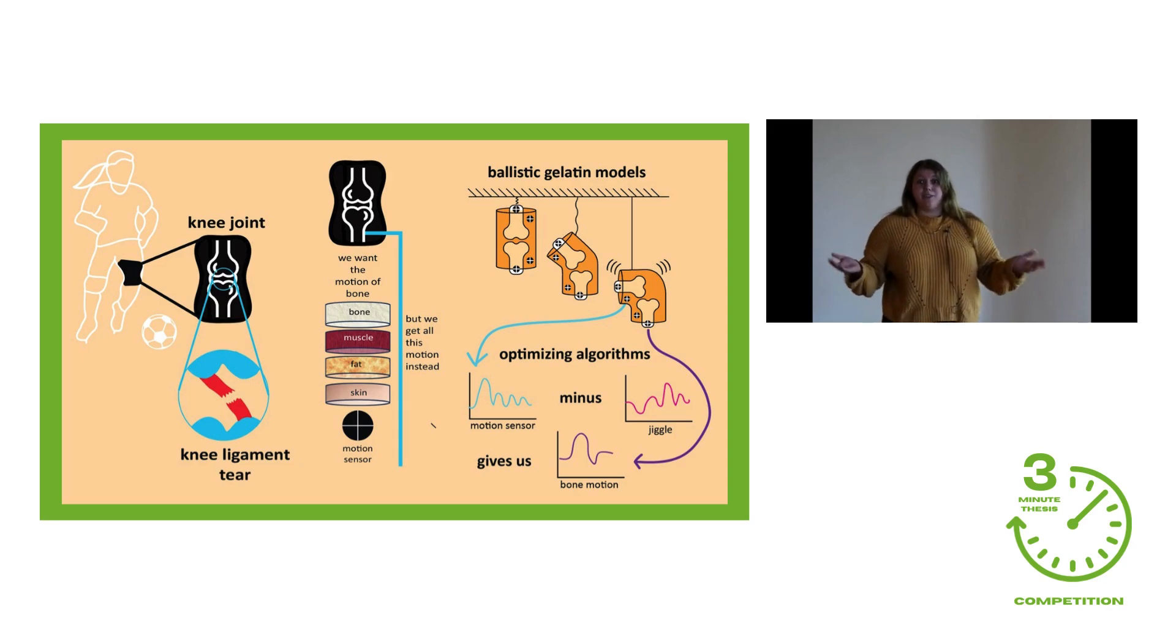So, how do I do this? First, I need to find something that can replicate that soft tissue jiggle, and I'm doing this using ballistic gelatin, which is the same ballistic gelatin you may have heard about on crime shows to test shock-related ballistics. I'll be using this ballistic gelatin to create a model of the knee that can accurately replicate both the soft tissue jiggle and the true bone motion.